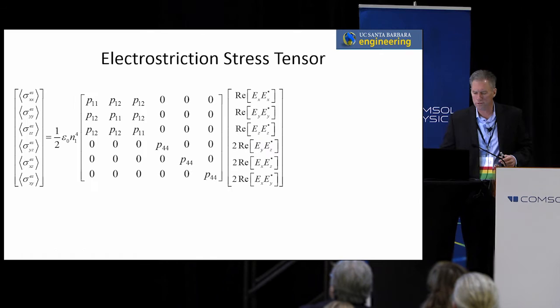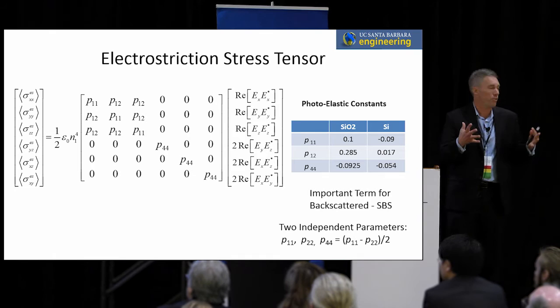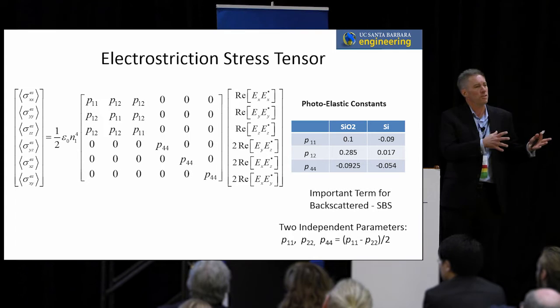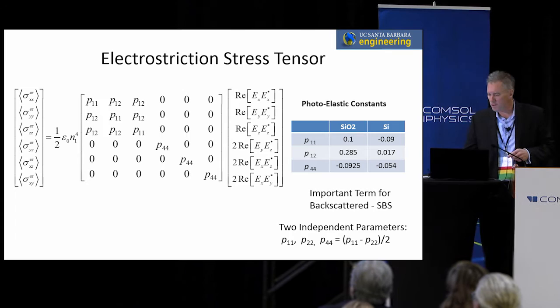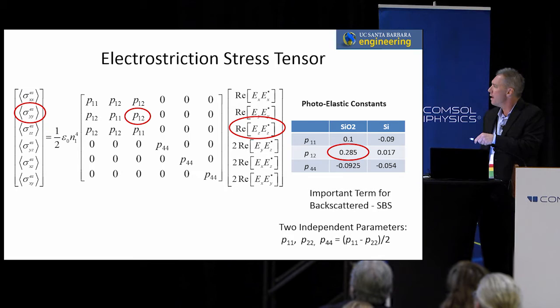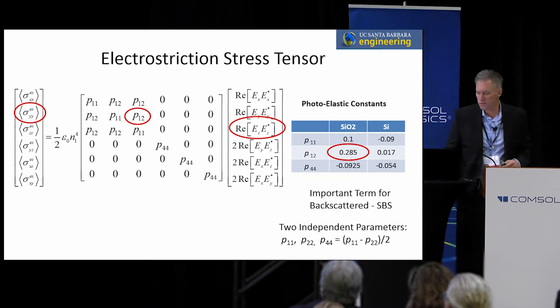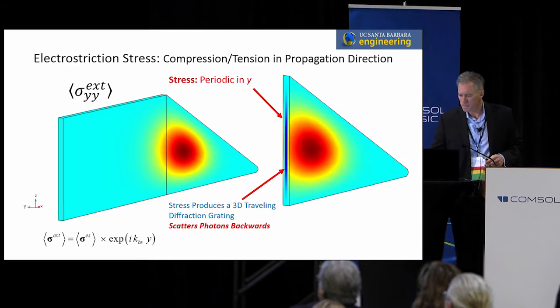You have a forcing term which is the electrostriction stress tensor, and that comes out of the photo-elasticity tensor. Putting stress changes the index of refraction, so that couples directly into electrostriction. For silica, it's a cross-term that's really important: electric fields in the Z direction create stresses in the Y direction — compressible stresses in the longitudinal direction. We apply that to this three-dimensional acoustic field and calculate the mode overlap integral.